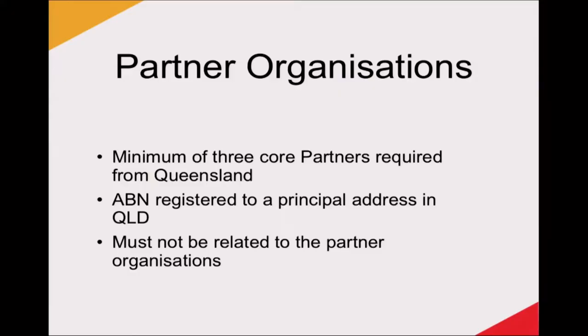To apply for funding, the lead applicant must be a business GST registered with an ABN and be able to demonstrate an ability to fund at least 75% of the total cost of the project. The lead applicant does not have to be based in Queensland but needs to have an Australian ABN and of course partner with Queensland companies. The government will enter into a contract only with lead applicants. Special purpose vehicle arrangements will also be considered but must meet the same criteria. Lead applicants must have a minimum of three core partners — they all need to be Queensland based. Partners cannot be related to the lead applicant, including subsidiaries.